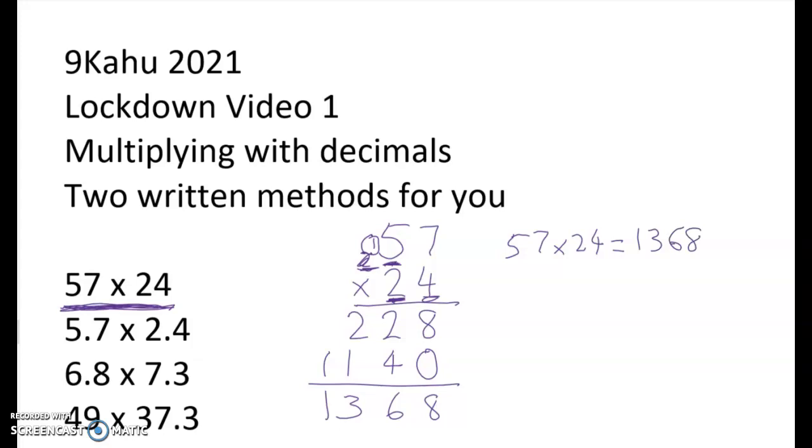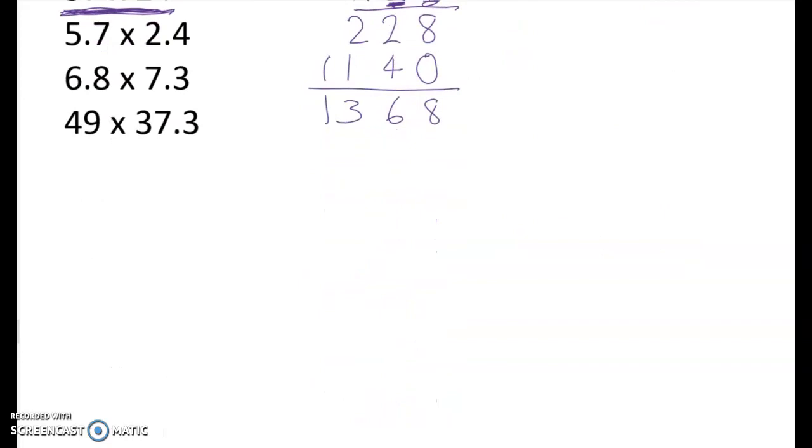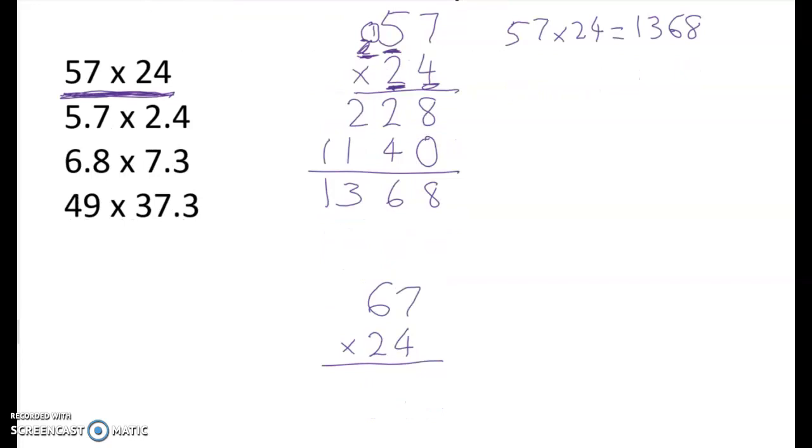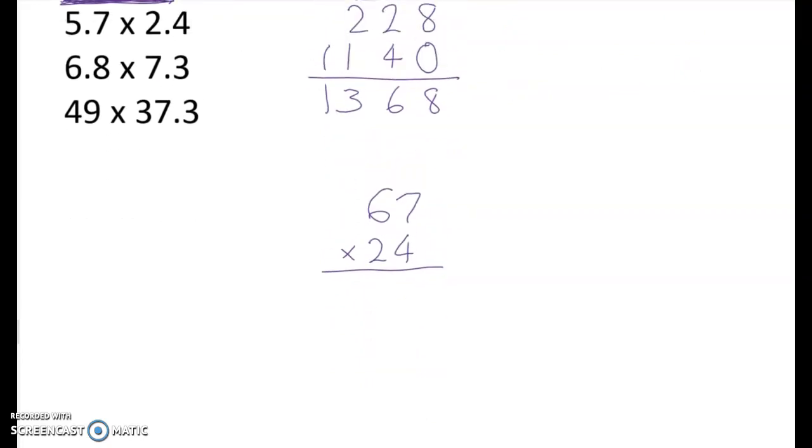I'm going to do another example now where I talk a bit more about why it's all working as I do it. So let's do 67 times 24. It's nearly the same as the last one. Right, so 4 sevens are 28. Now I write down the 8. I don't write down 28 because I can't fit more than up to 9 in a place value column. That's how our number system works. The highest digit that I can squeeze in here is 9. So I can't put down the whole 28. I have to say the 2 tens in the 28 are going to be linked in to the next step.